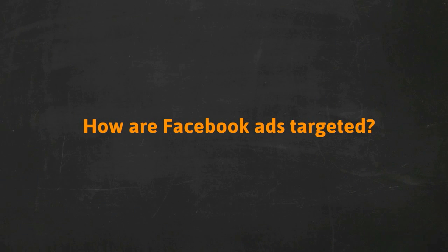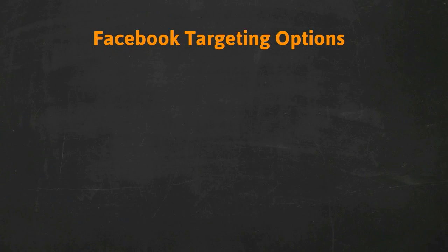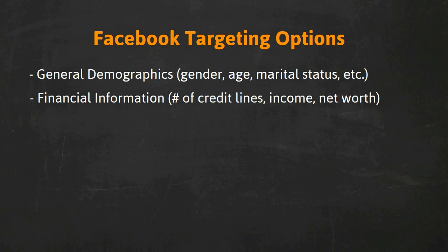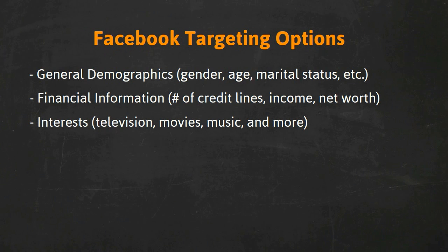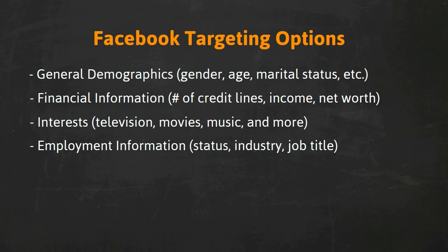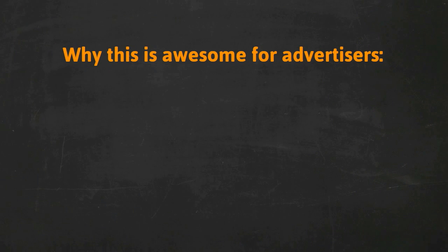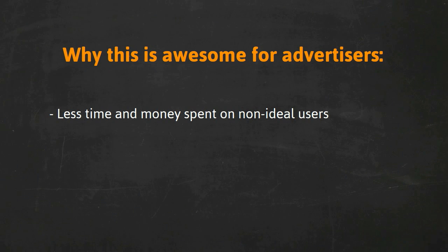Now let's talk about those audiences — the people you'll target your advertising to on the Facebook platform. Facebook has a lot of information on its users, including general demographics such as gender, age, marital status, and ethnicity. Financial information including their number of credit lines, household income, and net worth. Interests including television, movies, and music. Employment information including employment status, industry, and job title. And behavioral information, including users more likely to click or convert from an advertisement. The list of targeting means is incredibly extensive, which means we can save a great deal of both money and time by not wasting our advertising on non-ideal users.